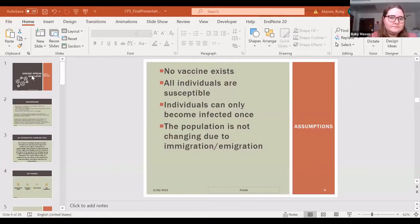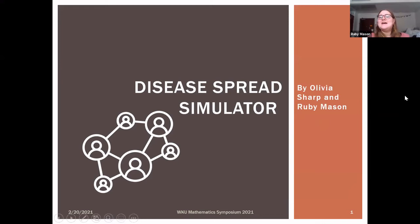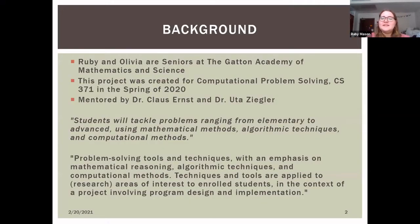I'm Ruby Mason and my partner is Olivia Sharp, and we created the project Disease Spread Simulator. We are seniors at the Gatton Academy of Math and Science here at WKU. We created this project for the class Computational Problem Solving, which is CS or Math 371, taken in the spring of 2020.